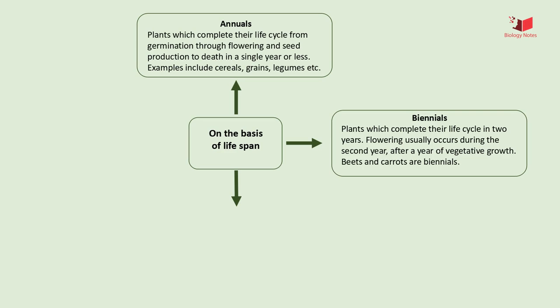A biennial plant is a flowering plant that takes two years to complete its biological life cycle. In the first year, the plant undergoes primary growth, in which its leaves, stems, and roots — vegetative structures — develop. The plant then flowers, producing fruits and seeds before it finally dies. Examples of biennial plants are carrot, stevia, beet, etc.